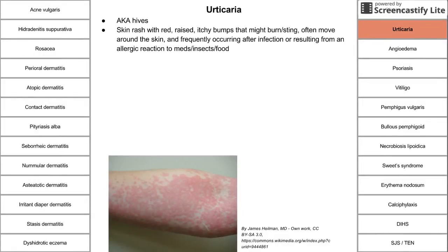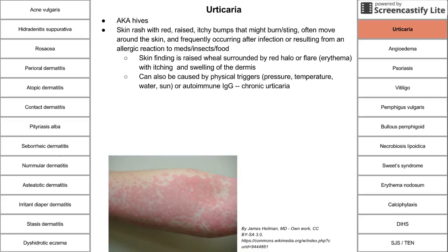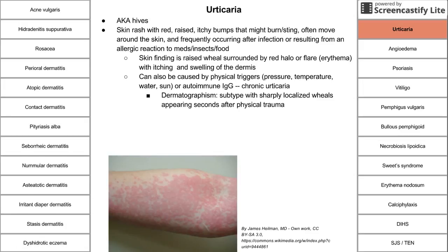Urticaria, commonly known as hives, is a skin rash with raised, red, itchy bumps that might burn and sting. They often move around the skin — if you circle a hive and return 12 hours later, it might be in a different place. It frequently occurs after infection or from an allergic response to medicine, insects, or food. The skin finding is a raised wheal with a red halo or flare. They can be caused by physical triggers like pressure, temperature, water, or sun. Dermatographism is a subtype where sharply localized wheals appear seconds after physical trauma.